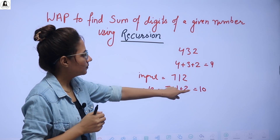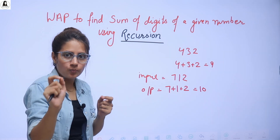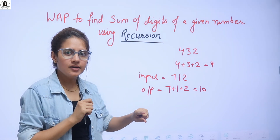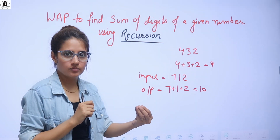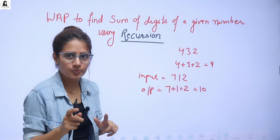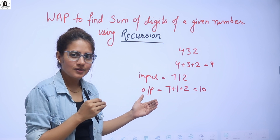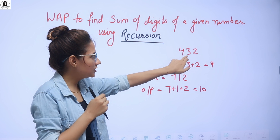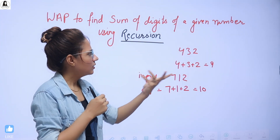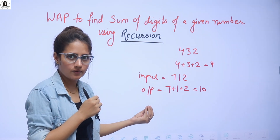Sum of digits of a given number — you got it? Now what is the right approach to solve a problem? Take a paper and pen and think about what should be the logic. Don't just directly jump to your laptop and Visual Studio Code and start writing code. You have to think first on paper. Think how you will find out different digits of this number like 2, then 3, then 4, and how you are going to add these individual digits.